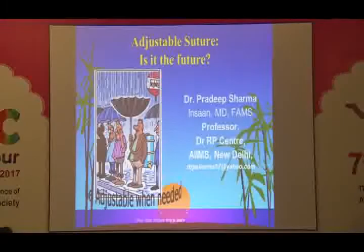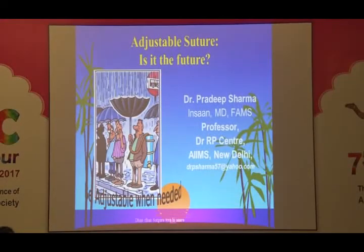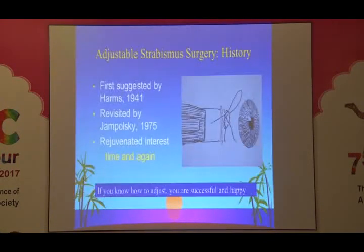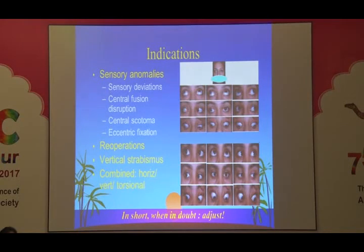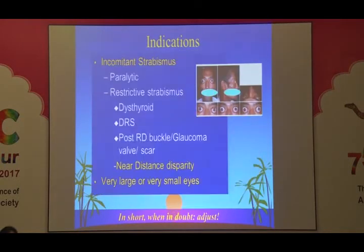Adjustable procedures in strabismus surgery have been described since 1941. Indications are when you have sensory deviation, central fusion disruption when fusion is not going to help you, re-operations, vertical strabismus, incomitant strabismus when patients have diplopia and are demanding — whether paralytic or restrictive. Also cases of near-distance disparity where deviations are different from near and distance — if you do one procedure you will end up with strabismus at the other fixation. Thyroid cases are also an indication.